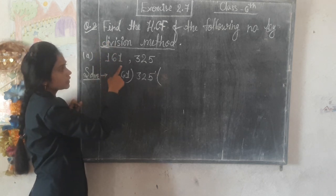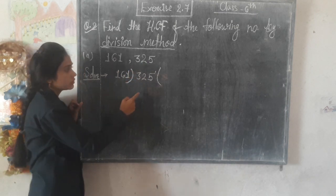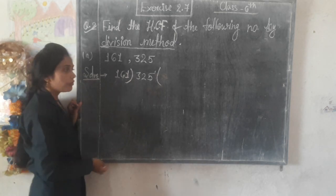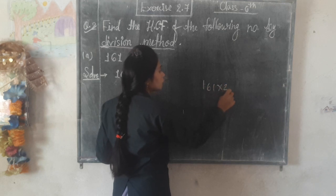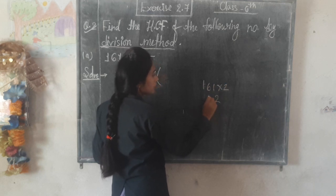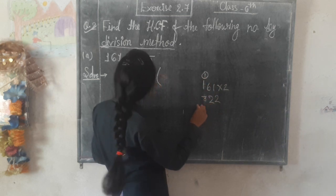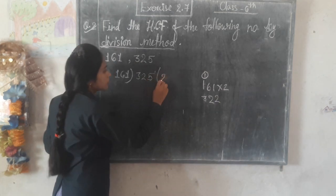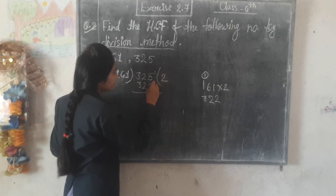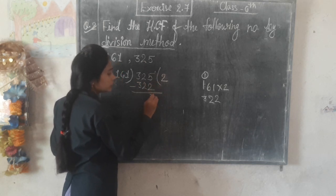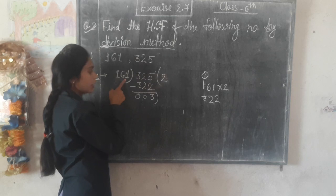The first number is 161 and the next is 325. So 325 is divided by 161. 161 into 2 is 322. Subtract: 325 minus 322 equals 3.